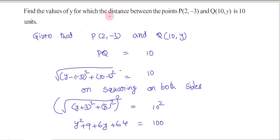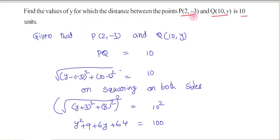Find the values of y for which the distance between the points P(2, -3) and Q(10, y) is 10 units.